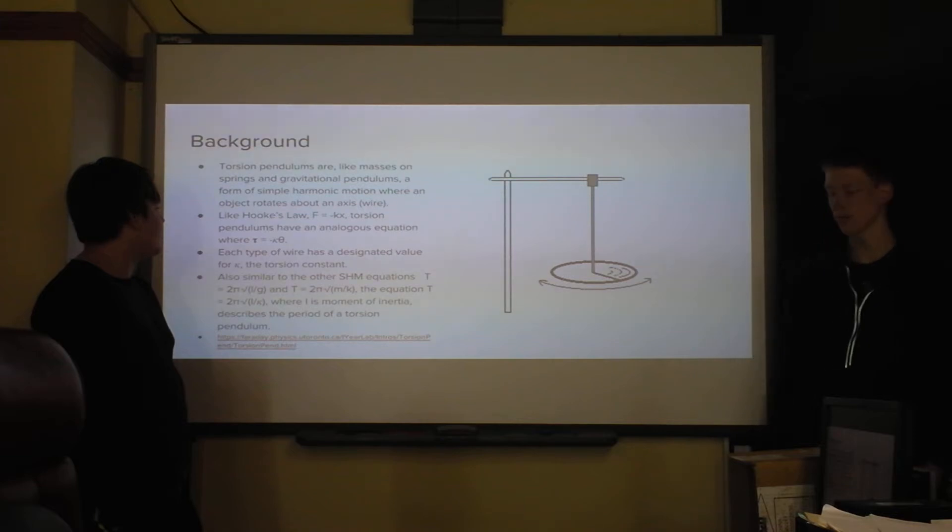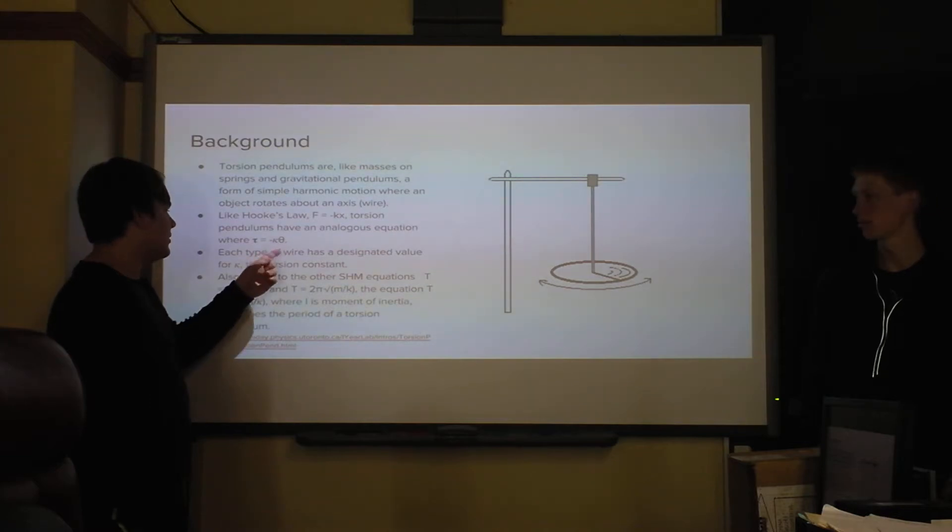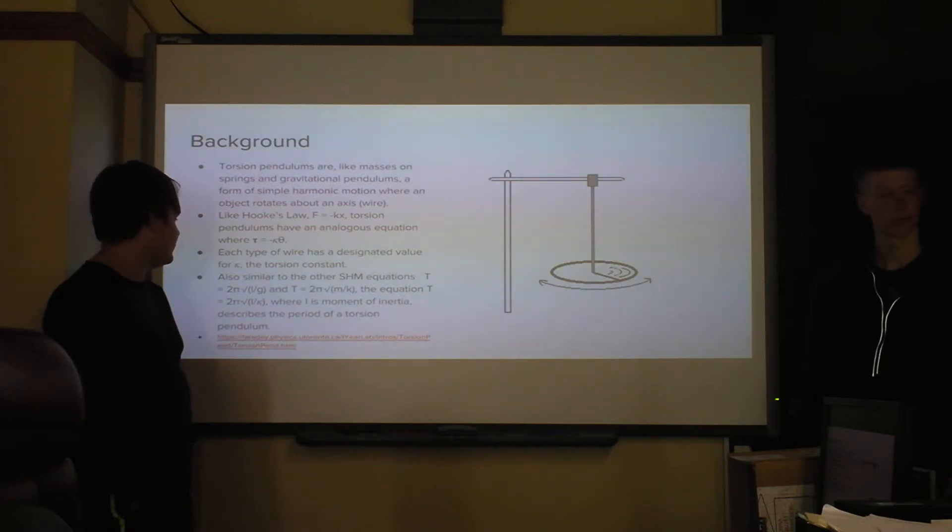And like Hooke's law, torsion pendulums have an analogous equation where the torque on an object is equal to the torsion constant, which is kappa times the displacement of theta. Each type of wire has its own designated value of kappa, the torsion constant.